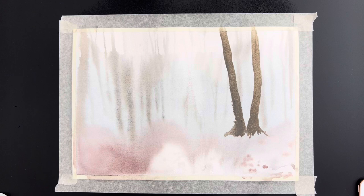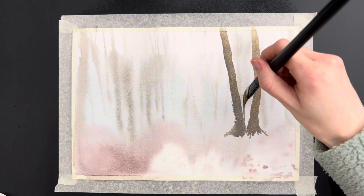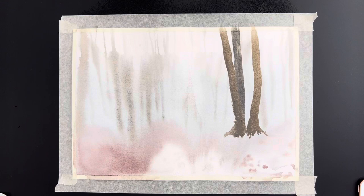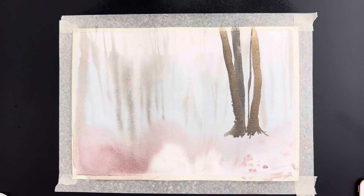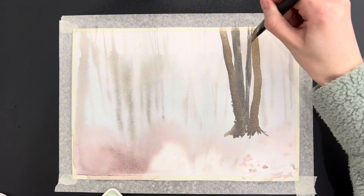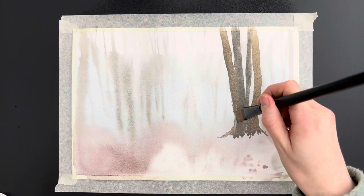So obviously I've used a darker brown shade here for these trees which are in the foreground. And the paper has dried at this point because I wanted these trees to be very defined as they're going to be in the foreground. This means it will be separated from that blurry background which is what I wanted.